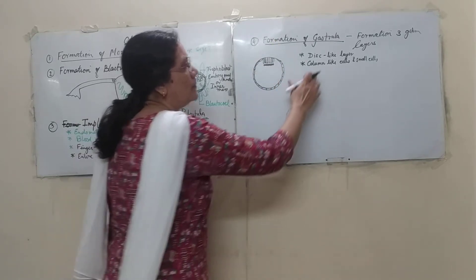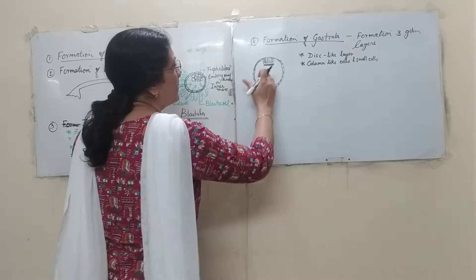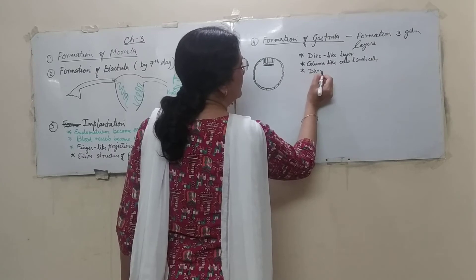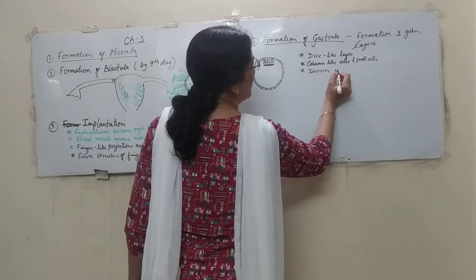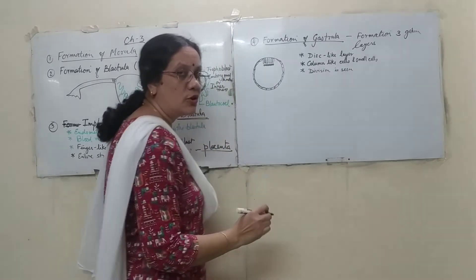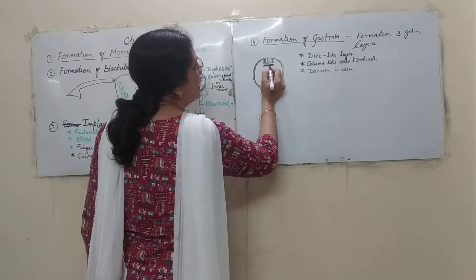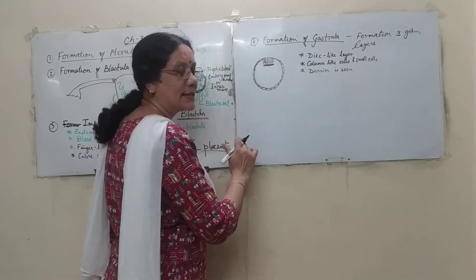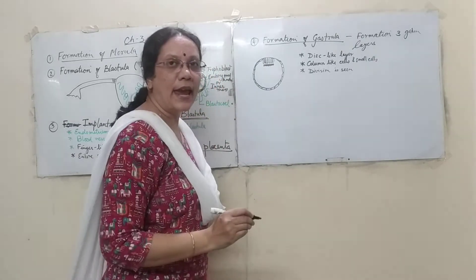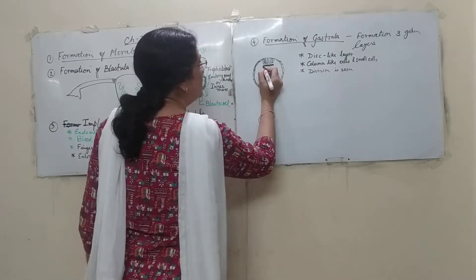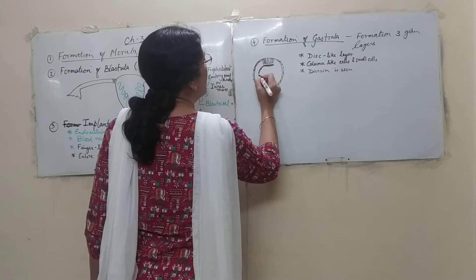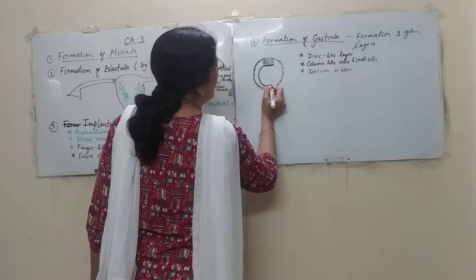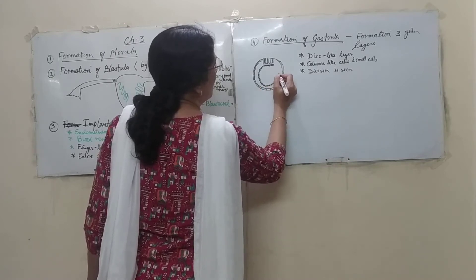The function of the small cells is not so important — the entire embryo is going to come from the columnar cells. The columnar cells divide again. A group of cells separates from the columnar cells, and these cells are known as ectoderm. They will further divide and form the first layer, which is the endoderm.